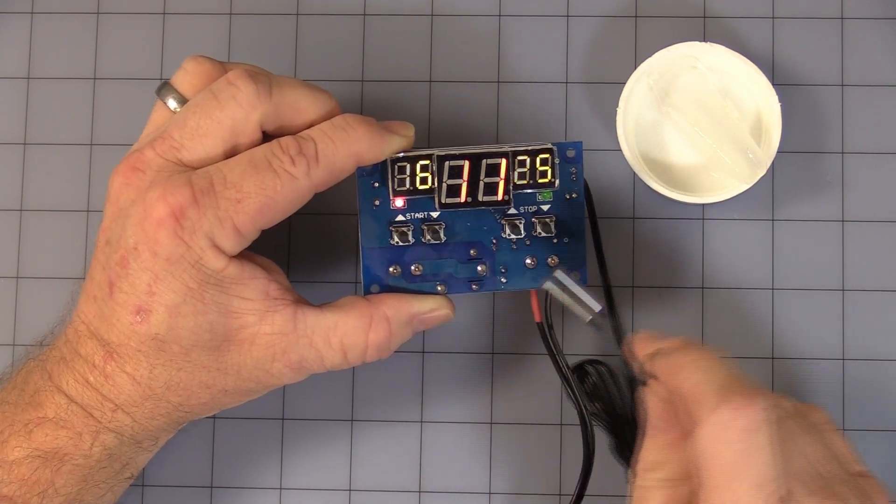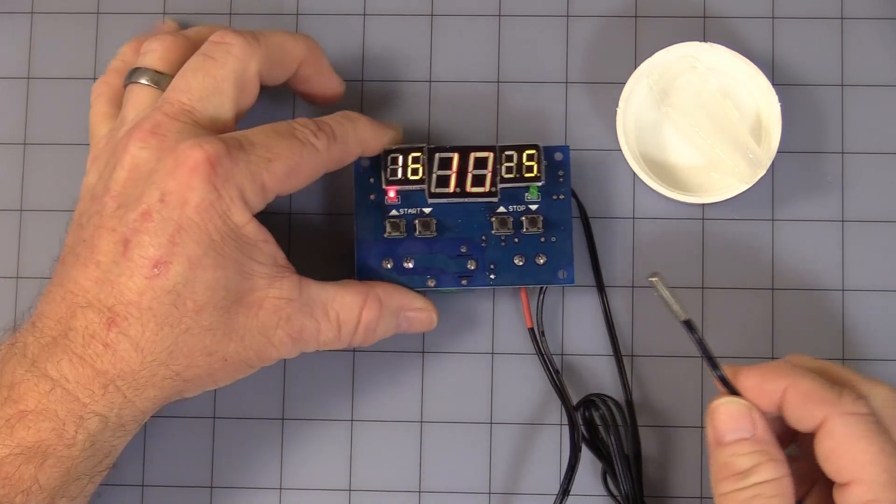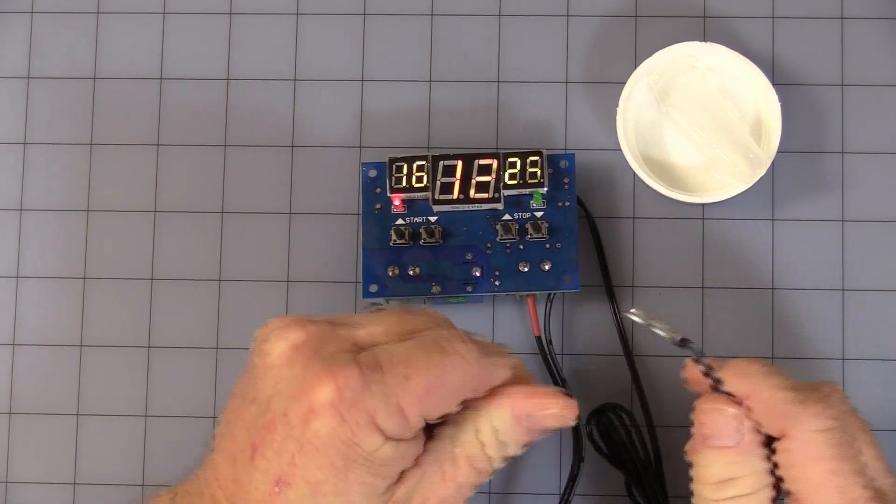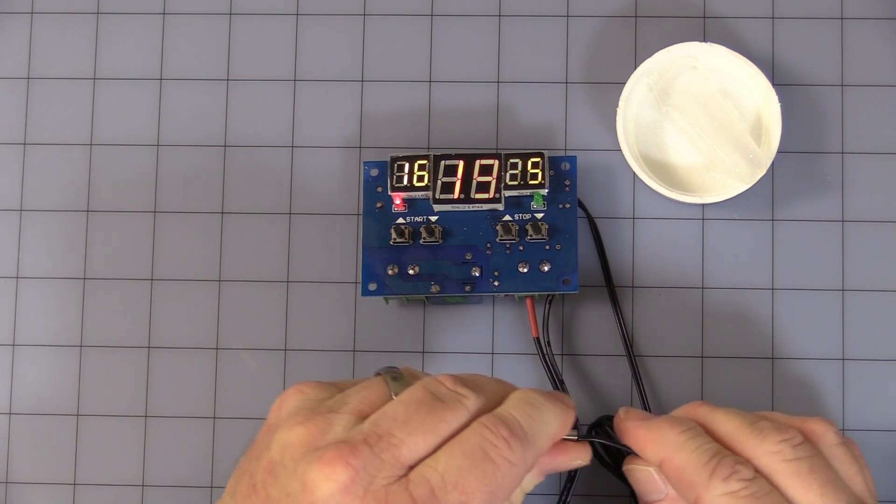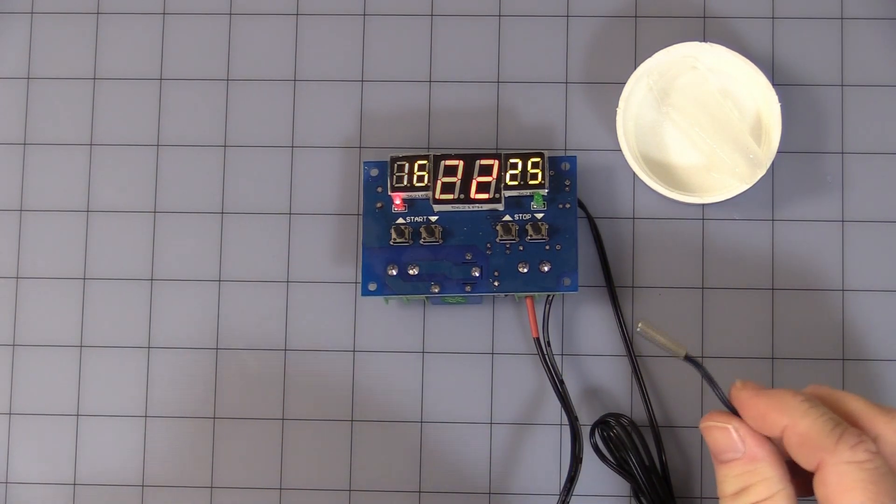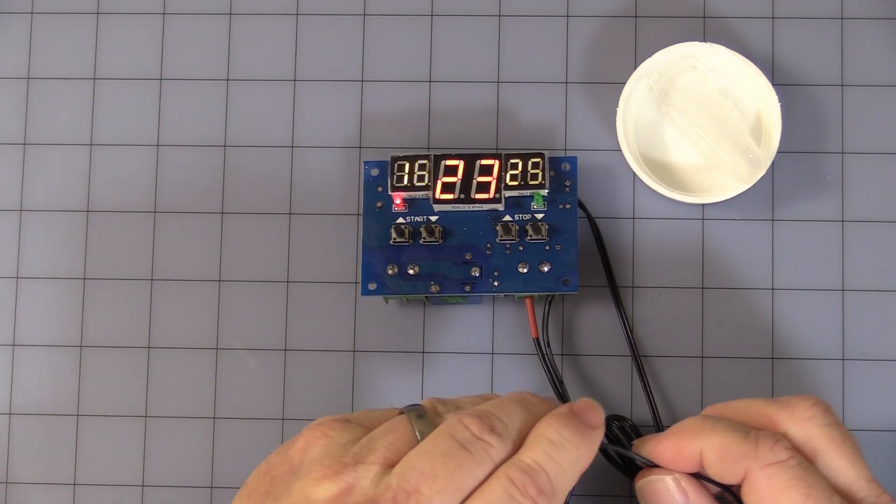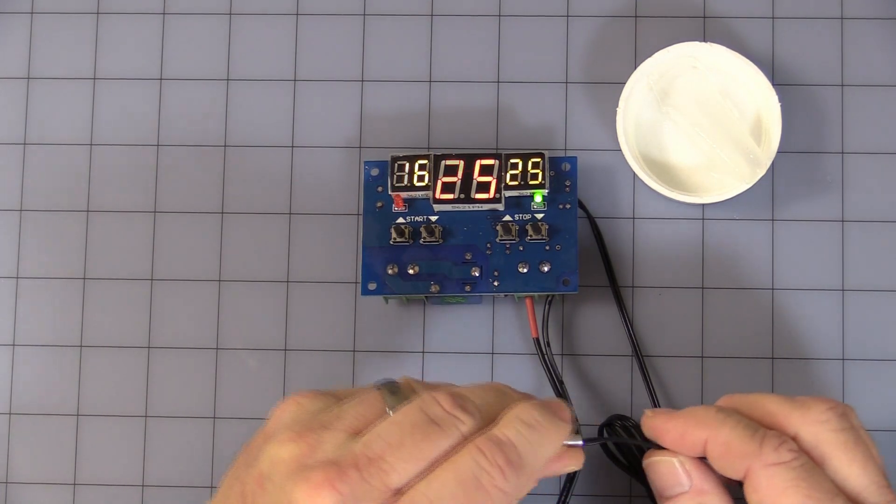You see the LED turn on to signify the relay is active. Now we must warm it up until 25 degrees Celsius to get it to turn off. So I'll use my fingers here, warm it up, and the relay turns off.